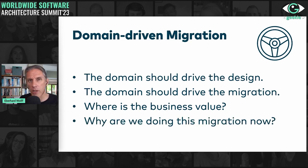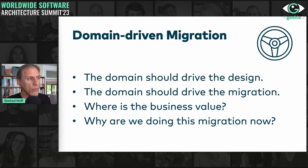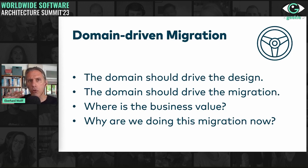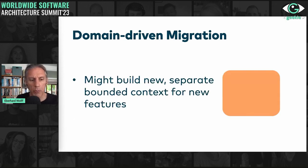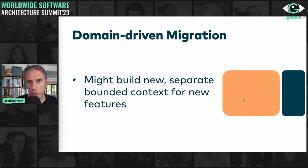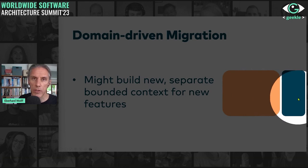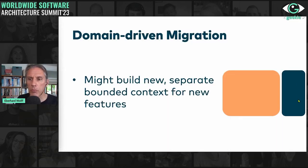An interesting question is: why are we doing this migration now? Why not a year ago or in a year? Oftentimes it's because there is some business change — maybe you're focusing more on online commerce, or going international, and your old software system doesn't fit those needs anymore. One alternative is to build a new separate bounded context for a new feature alongside the old system. This already justifies a new bounded context, and at least the mess the old system represents doesn't grow.